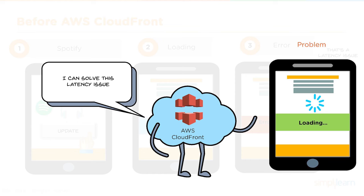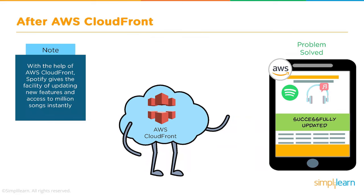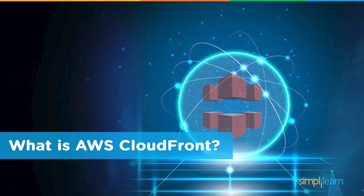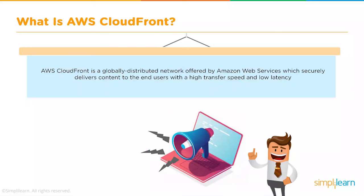With the introduction of AWS CloudFront, this problem of loading the application got resolved. After AWS CloudFront, Spotify provides the facility of updating new features and access to millions of songs that you can access instantly. The latency issues were solved and you can successfully access your application. AWS CloudFront is a globally distributed network offered by AWS which securely delivers content to end users across any geography with higher transfer speed and low latency.